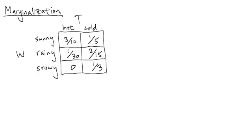When we know how two random variables are related through a joint probability table, such as this one here — P of W and T — then we can actually figure out what the distribution is for W and also what the distribution is for T. This procedure is called Marginalization, and it works as follows.